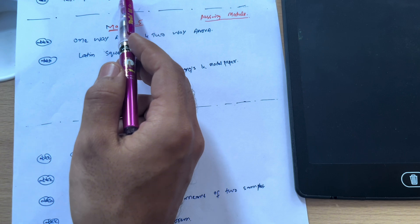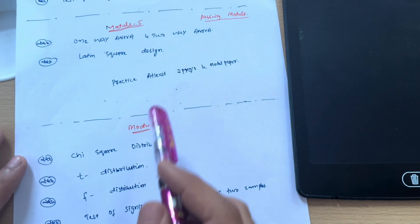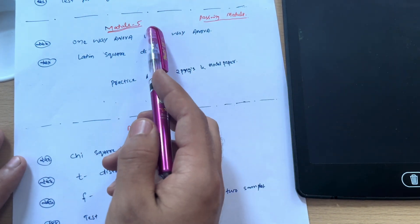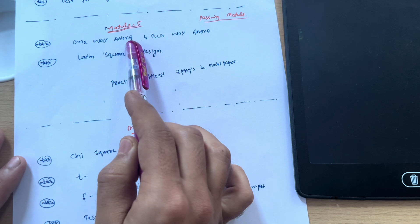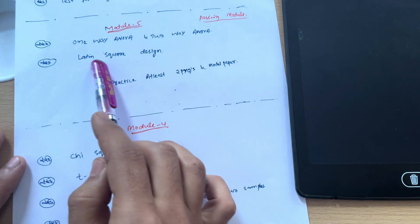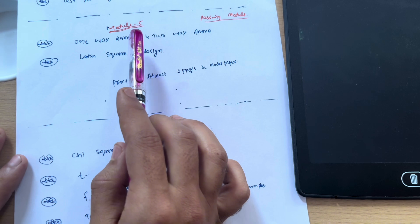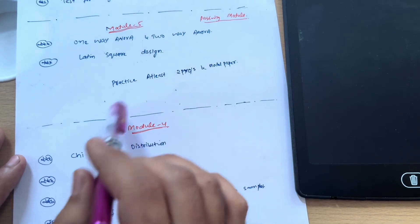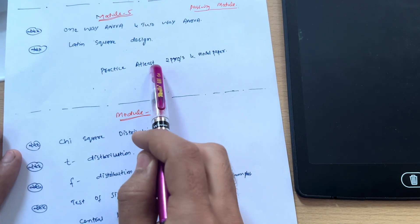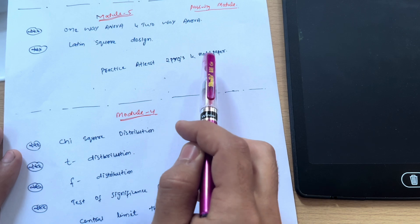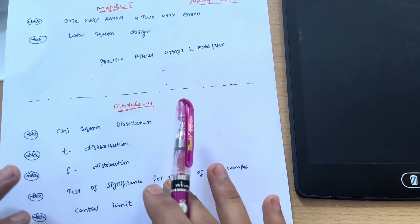Next we have passing module Module 5, in which you have to go through one-way ANOVA problem, two-way ANOVA problem, and Latin square design. This much is enough to cover Module 5—easily you can get 20 marks. These 20 marks are just in your pocket. Practice at least two previous question papers and model papers so that you will come up with good practice from Module 5.